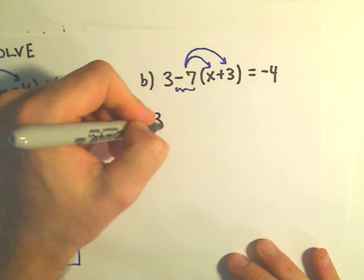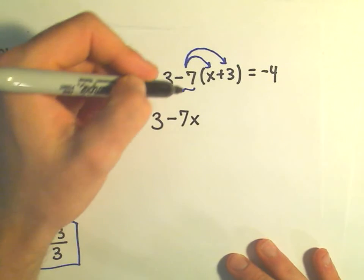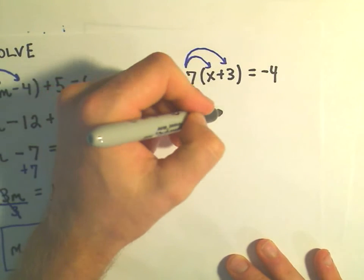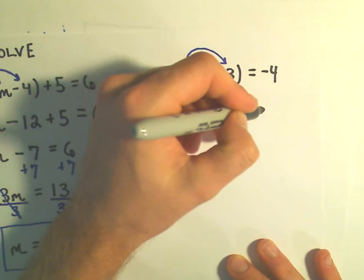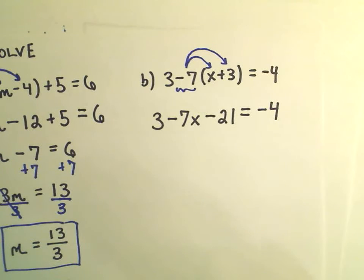So the 3 just drops down, and then I think negative 7 times x would be negative 7x, negative 7 times positive 3 would be negative 21. Our negative 4 is just hanging out. Okay, so now I'm going to combine my like terms.